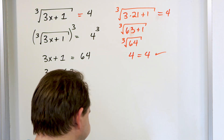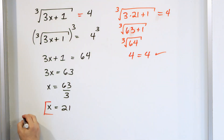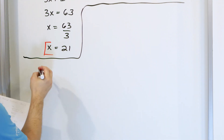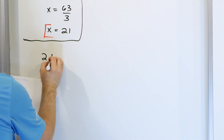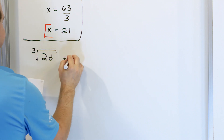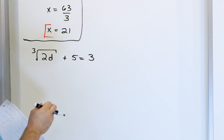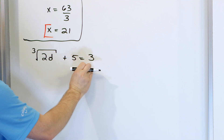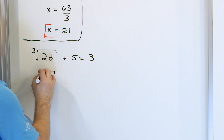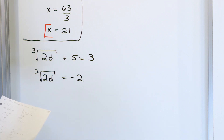Let's do the next one right on the same board. The next equation is 2 times a variable d, the cube root of that, plus 5 equals 3. We want to get the radical by itself, so let's subtract 5. What we'll have is the cube root of 2d on the left, and 3 minus 5 is negative 2 on the right.